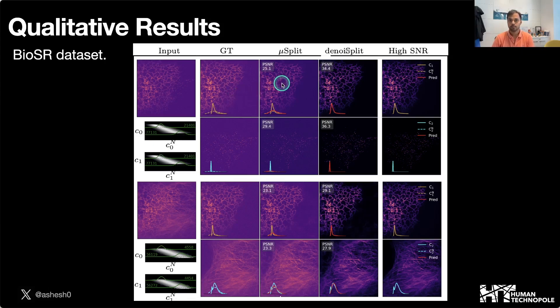In the next column we have the prediction from μSplit, which is a baseline. In the next column is the prediction by our method DenoiseSplit, and the last column has the high SNR ground truth, which we keep here just for reference.